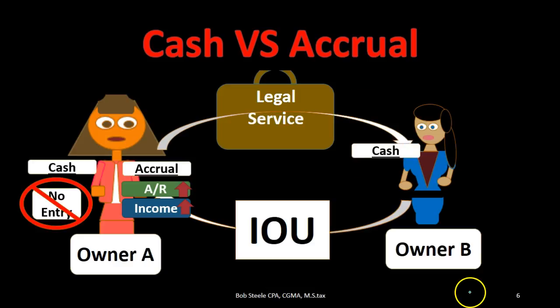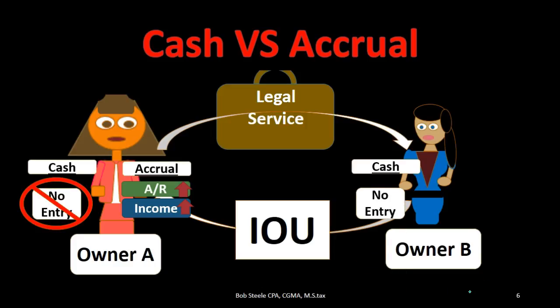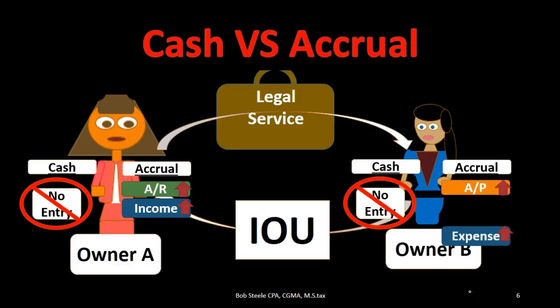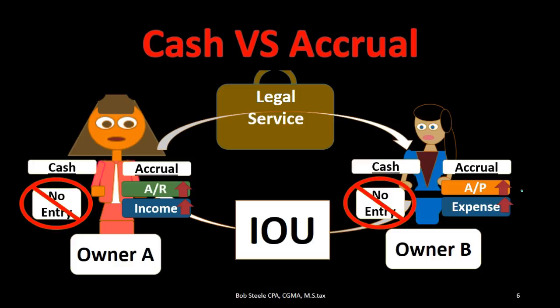If we look at owner B under a cash method, no entry. Under the accrual method, we have a liability and an expense. Why? Because we consumed the legal services at this point in time. Just like if we used our credit card to purchase something, we should record the liability related to the consumption of those services even though the cash hasn't been spent yet. Note that there's another advantage to the accrual method here: we have an accounts receivable account and an accounts payable account. Those two accounts track who owes us money and who we owe money to, which is important.